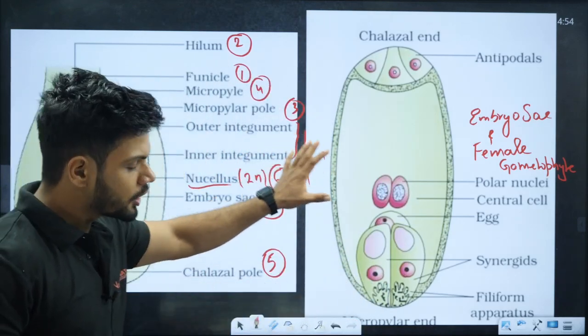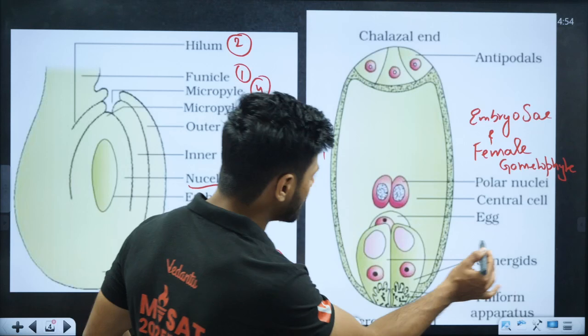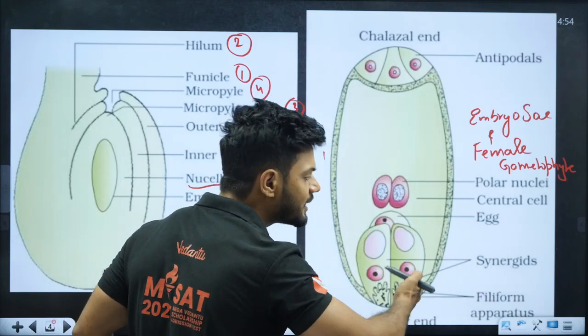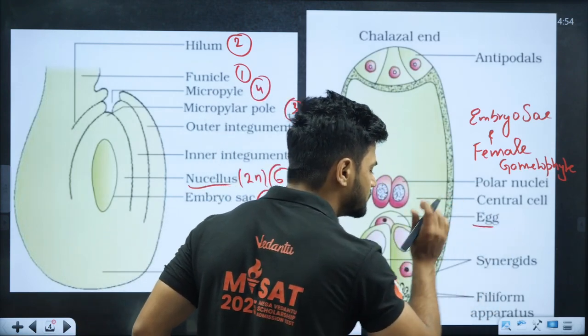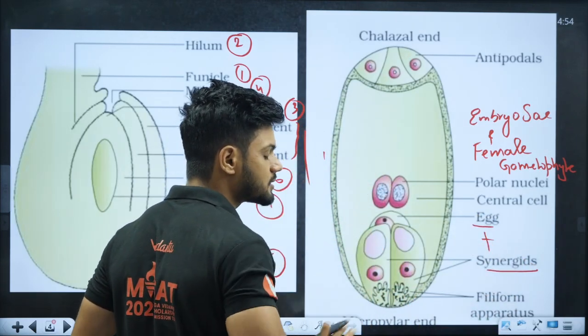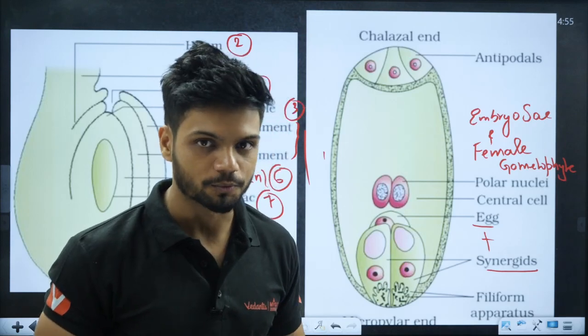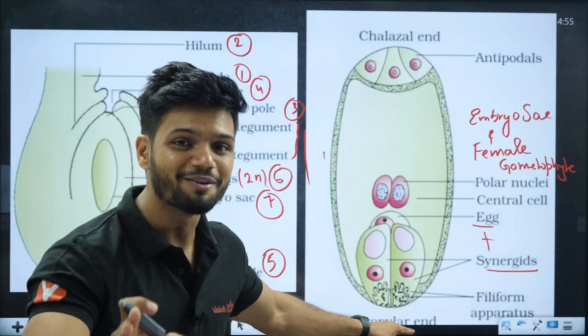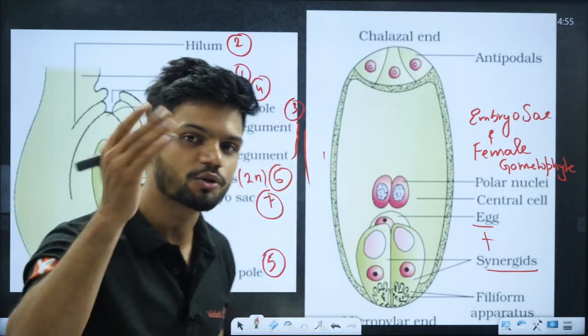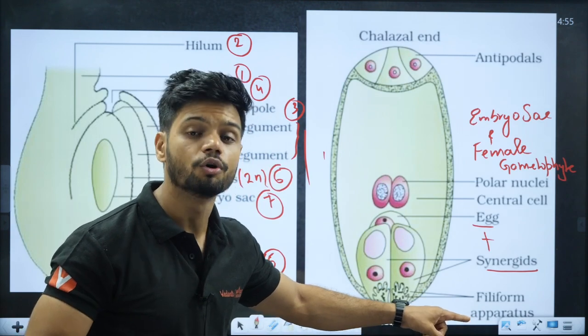In the embryo sac structure at the micropylar end we have the egg apparatus. In the egg apparatus we have single egg as well as two synergids. Together they are called egg apparatus. Inside the synergids there is something called filiform apparatus, which guides the pollen tube.